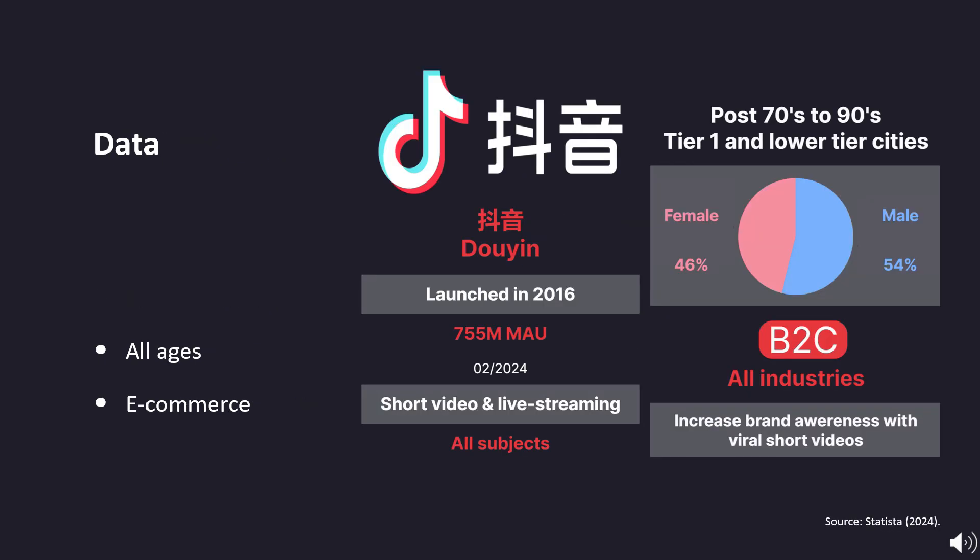Douyin has a massive 755 million monthly active users in China, appealing to all age groups. Unlike TikTok, which primarily attracts younger users, 20% of Douyin's audience is over 45.